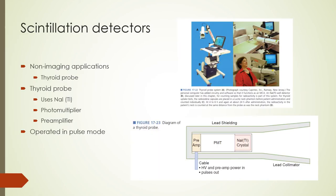In nuclear medicine, scintillators are used in various non-imaging applications, including thyroid probes and well counters. Thyroid probes are used to measure the uptake of iodine-131 or iodine-123 in the thyroid gland. The probe is shielded on all sides and collimated so it records activity coming from only one part of the patient. The probe has a sodium iodide crystal doped with thallium and is coupled to a photomultiplier tube and a pre-amplifier. The signals are sent to a counter for accumulation and display. The photograph shows a typical setup and measurement for a patient.